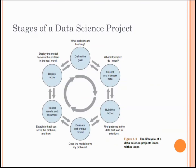Welcome to the second lecture of the first module of course CS 466, Data Science. Today we'll be dealing with stages of a data science project. There are mainly six stages in a data science project, as you can see in the figure given. This shows the life cycle of a data science project, and it has loops within loops — the activities of one stage will often overlap those of other stages, so we'll have to loop back and forth between two or more stages before moving forward.